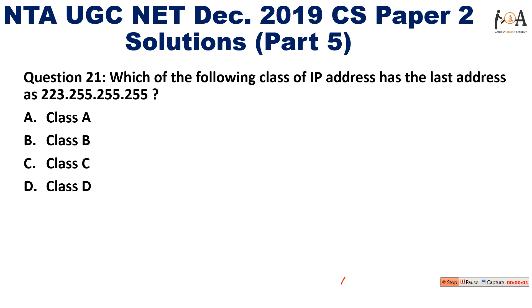Hi guys, a very warm welcome to Arihant Online Academy. Here is part 5 of our NTA UGC NET December 2019 CS Paper 2 solution. The previous 20 questions have been solved in parts 1, 2, 3, and 4 respectively, whose links are given in the description section. Do watch them so that you can grasp the complete knowledge of the December 2019 CS Paper 2.